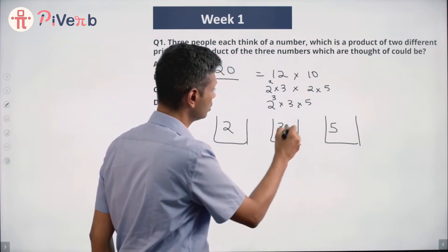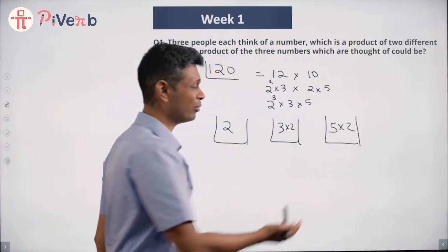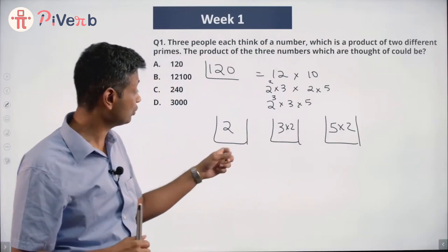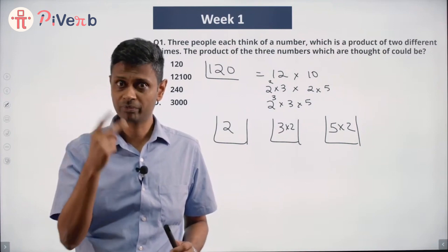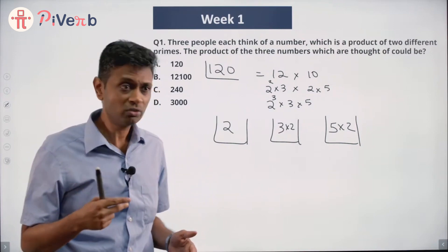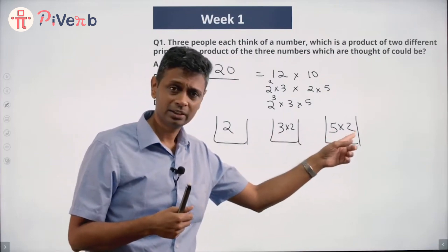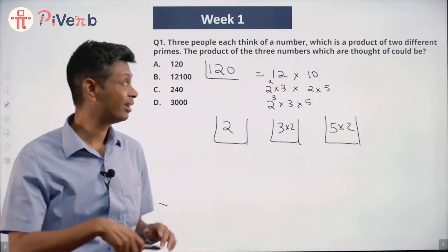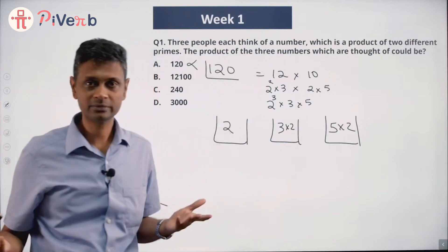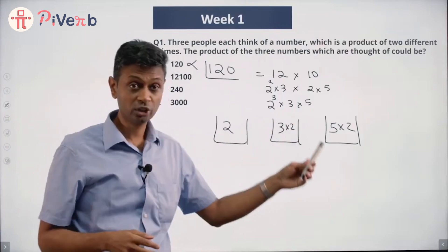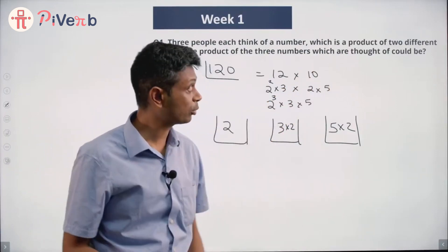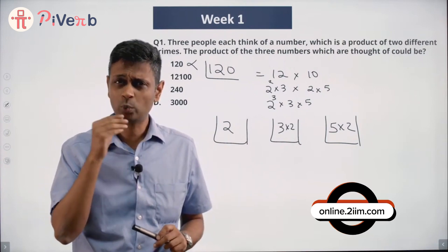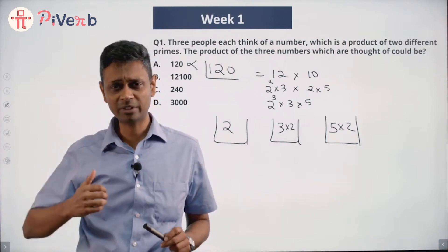But we have a problem! We're told each of the three numbers must be a product of two different primes. If I put a 3 and a 5 together in one box, and a 2 in another, I don't have room for a second different prime in that box. So 120 cannot be the answer — I cannot express 120 as a product of three numbers, each satisfying this condition.